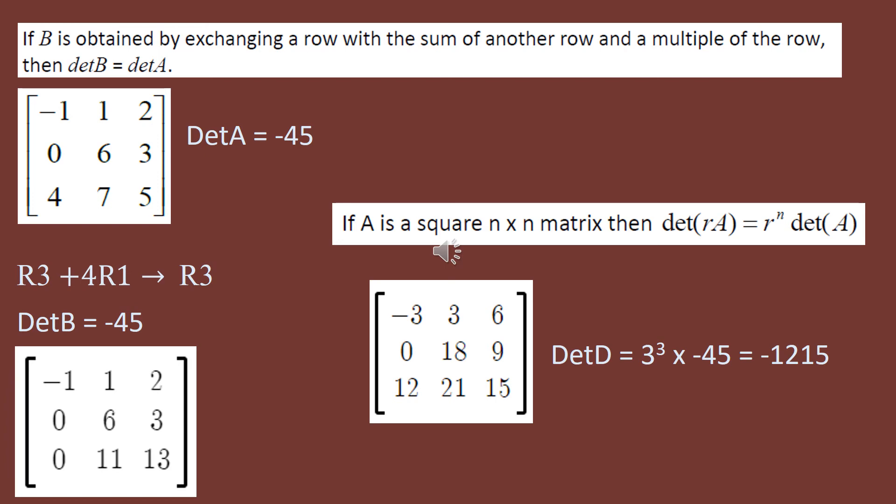One last rule related to elementary row operations: if I multiply the entire matrix by a scalar, the new determinant is that scalar raised to the n power times the original determinant, where n is the size of the matrix. If I have a 3x3 and I multiply the whole matrix by 3, the new determinant will be 3 cubed times negative 45, giving negative 1,215. Every value got multiplied by 3, not just one row, so you apply the scalar row rule three times, hence 3 cubed times the original determinant.